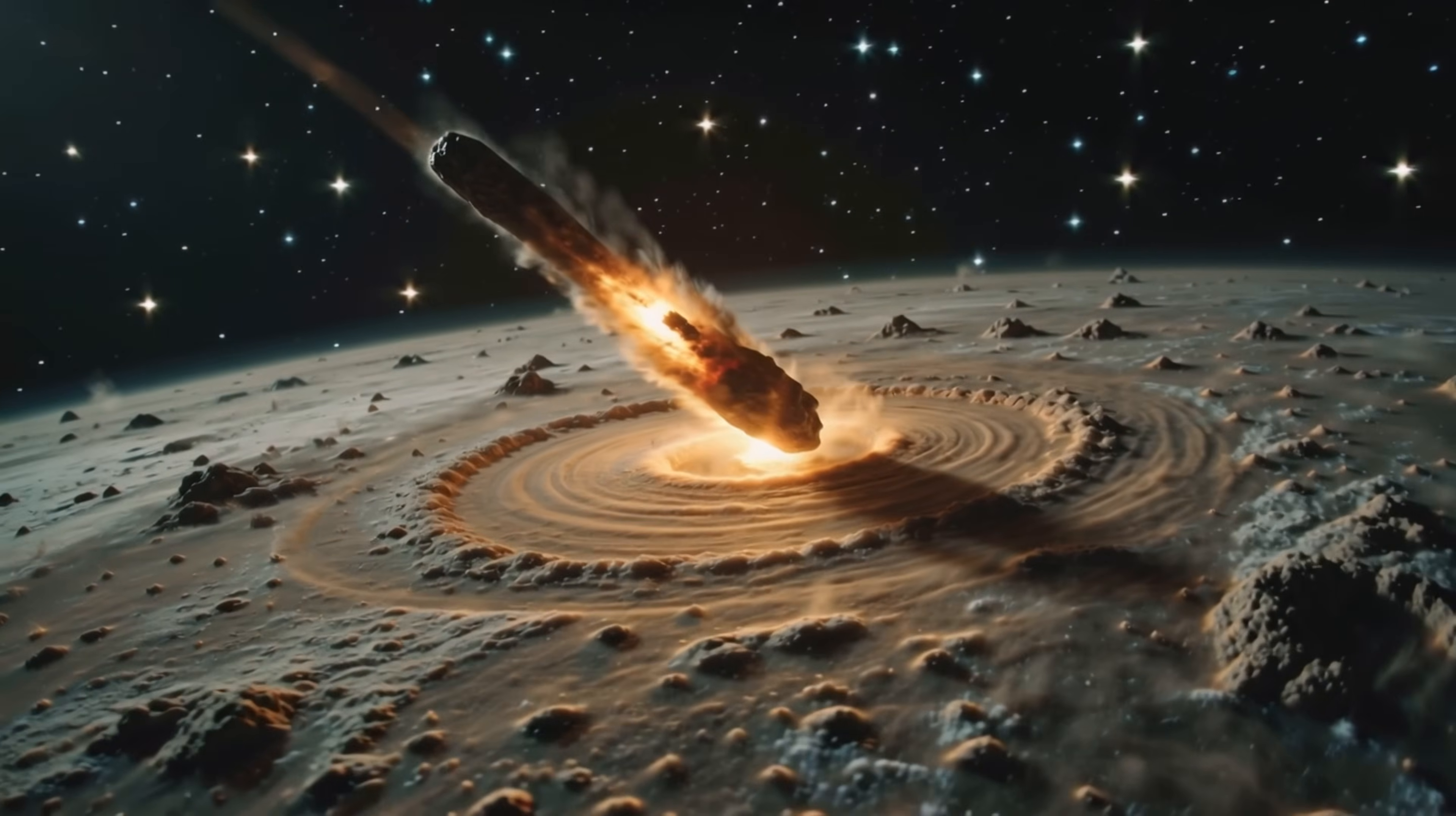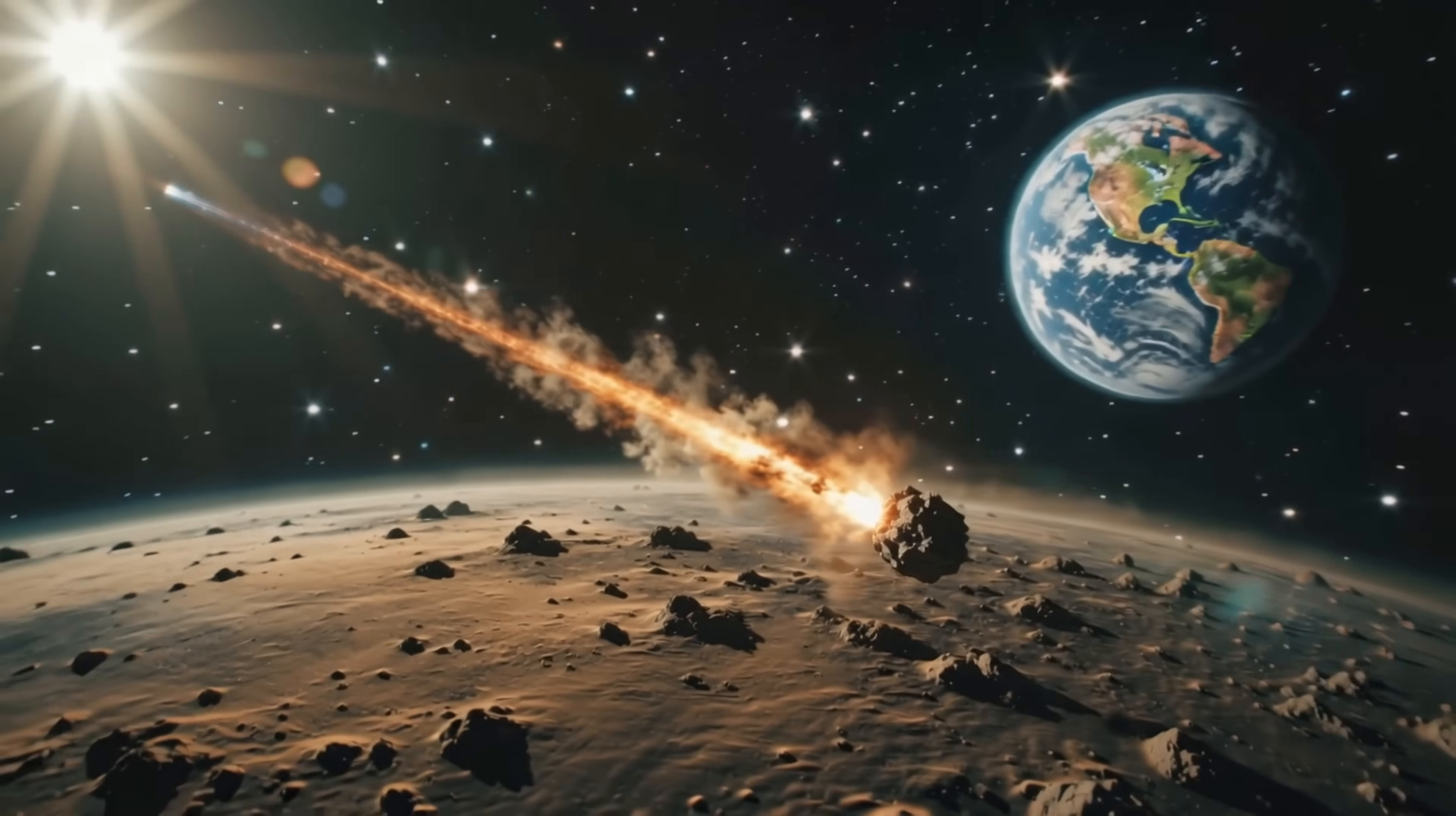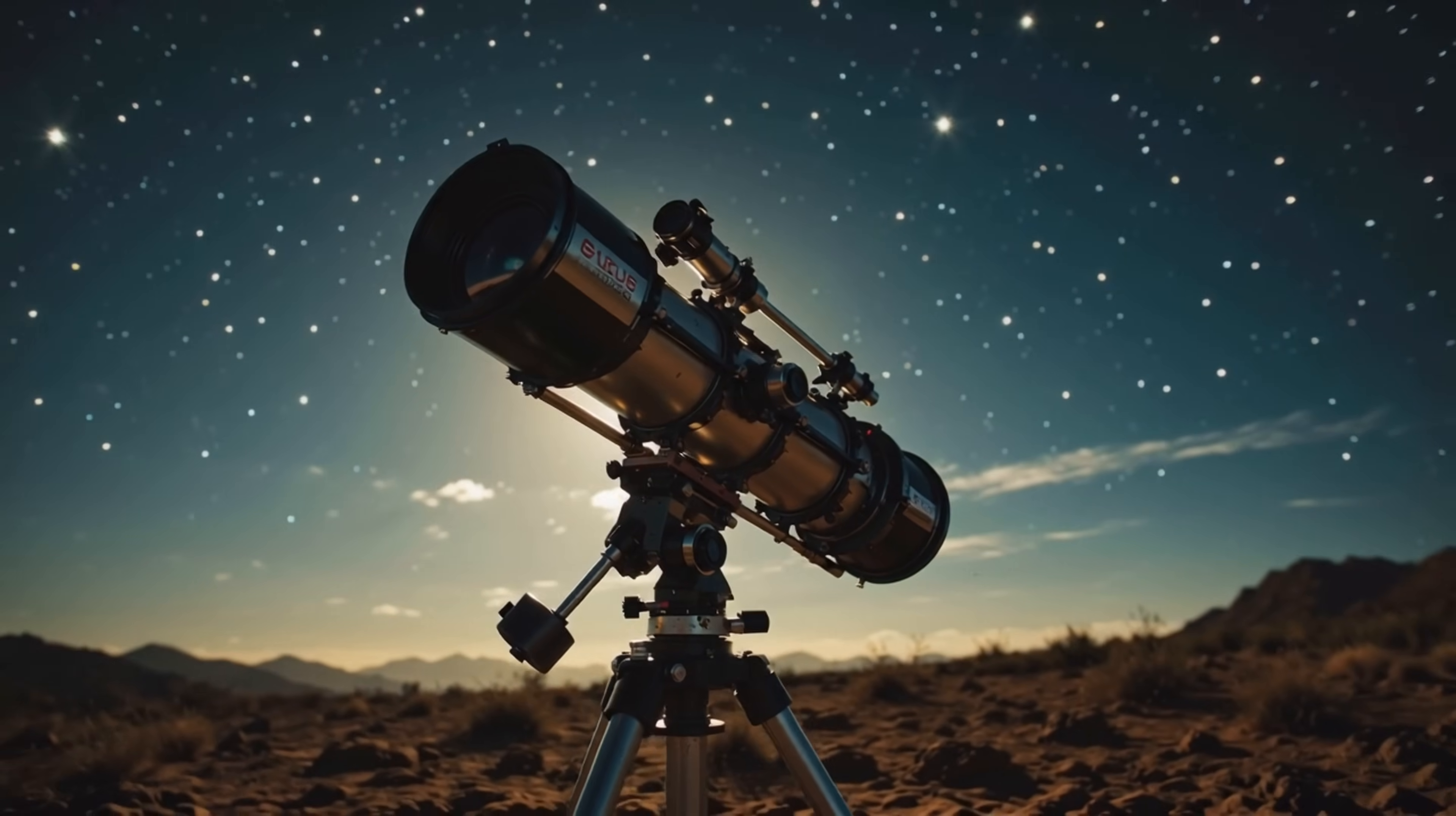The comet will reach perihelion around October 29th to 30th, 2025, passing roughly 1.36 to 1.4 astronomical units from the Sun just inside Mars' orbit. Unfortunately for Earth-based observers, the comet will be near solar conjunction at perihelion, making it nearly impossible to observe from our planet during its closest solar approach.